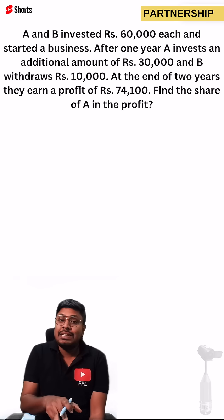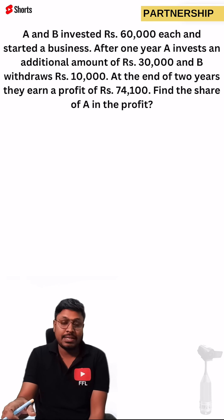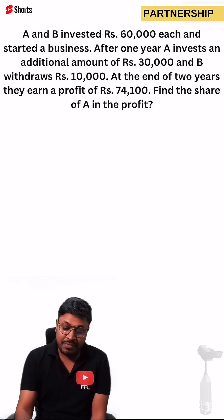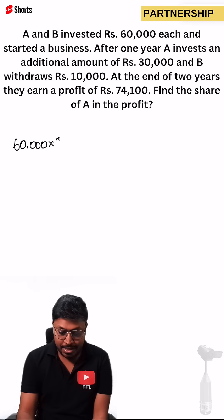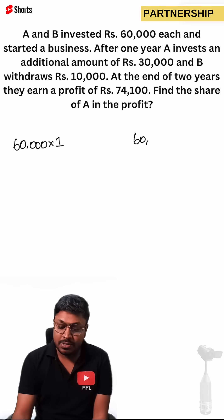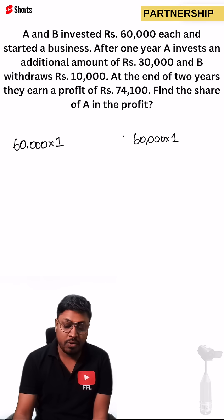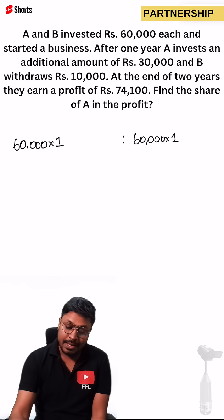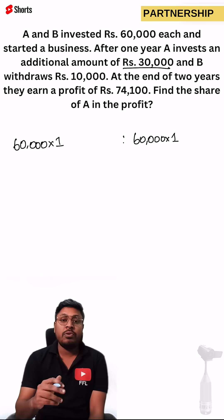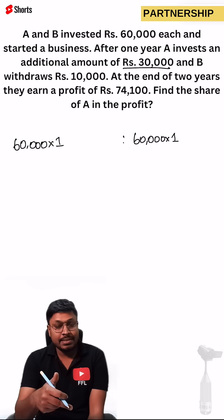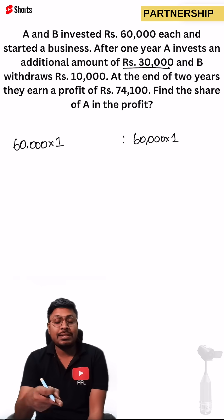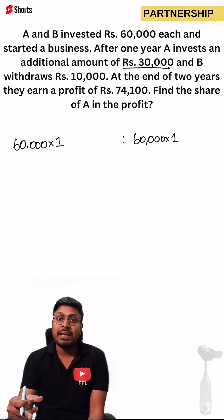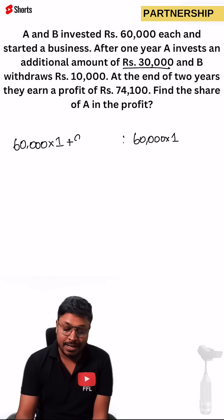Both persons are investing 60,000 each for the first year, so 60,000 for one year. After one year, A invested an additional amount of 30,000. He was already investing 60,000, so now adding 30,000 gives 90,000. So A is investing 90,000 for the second year.